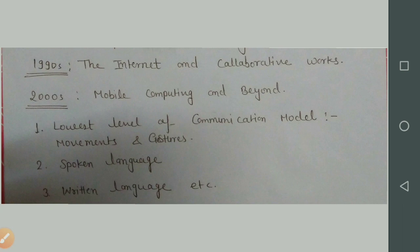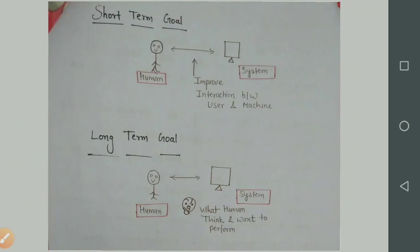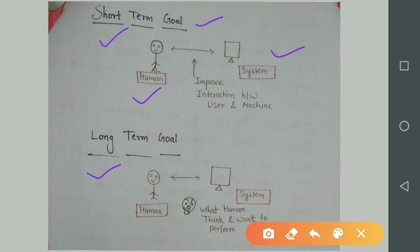So after that, we have two types of goals: short-term goal and long-term goal. Now the goal of HCI is to improve interaction between users and machines, user and system. This is the short-term goal.